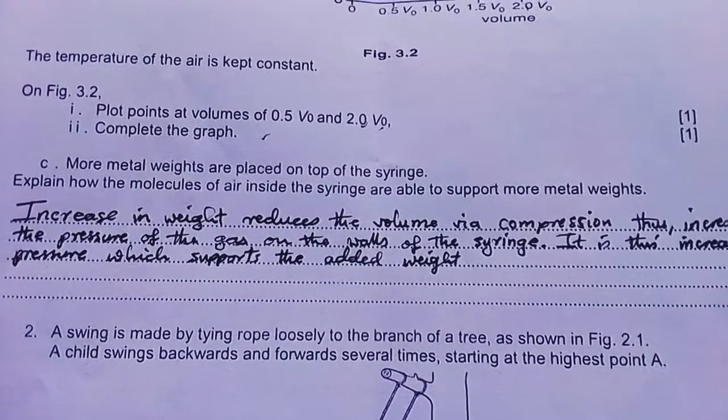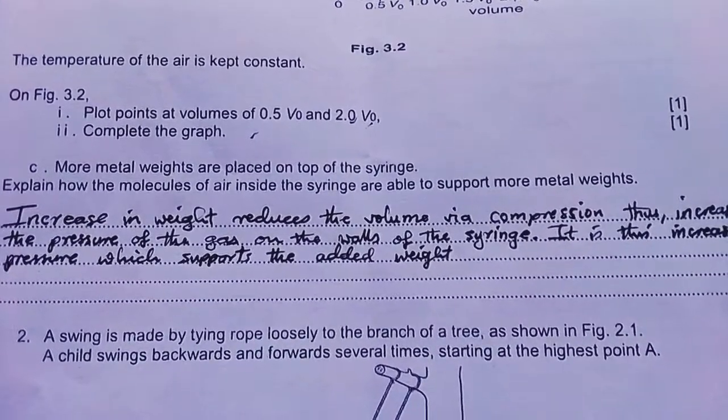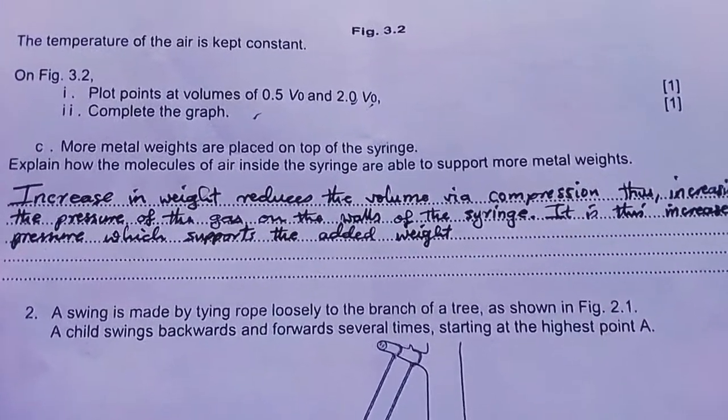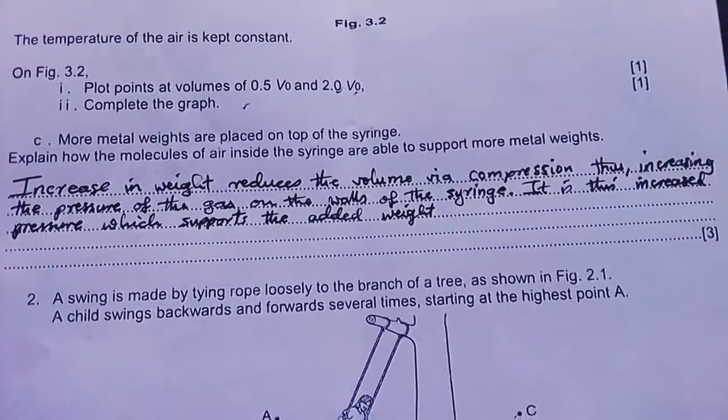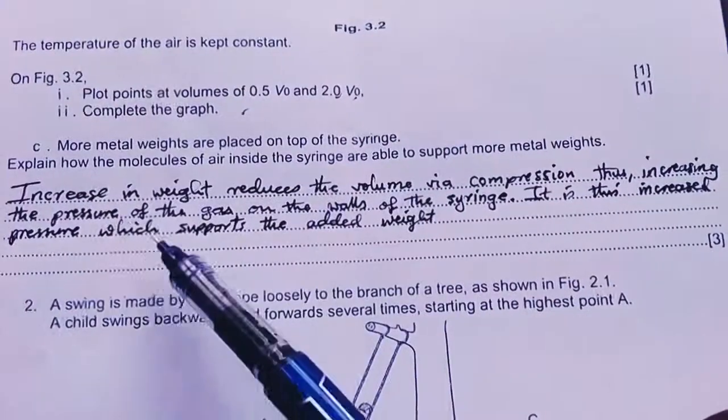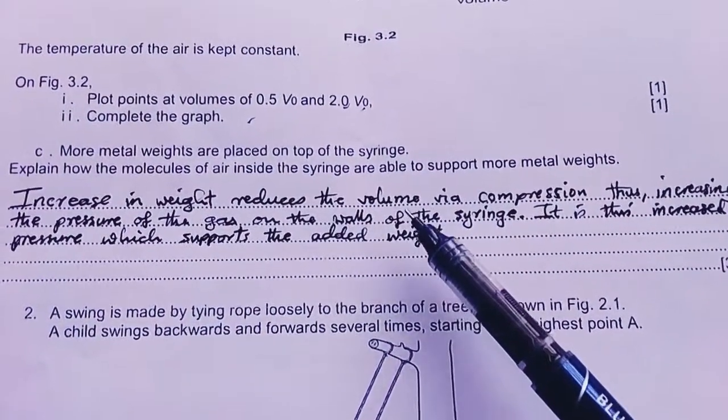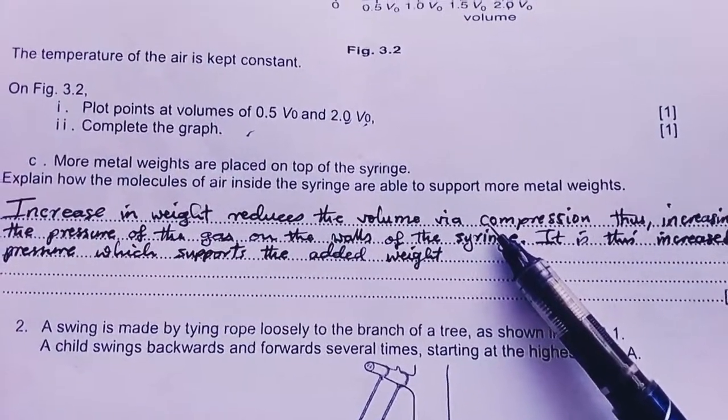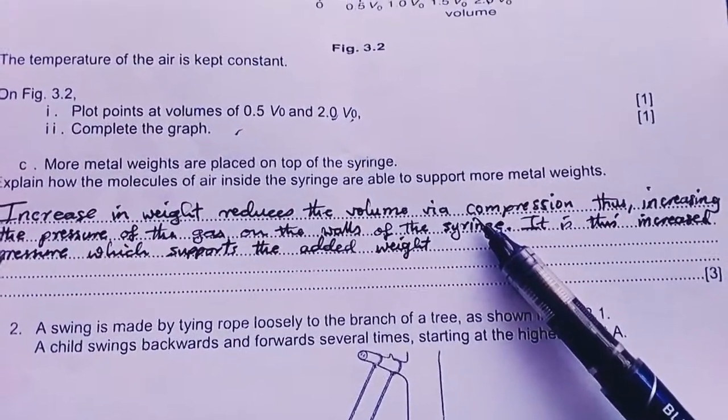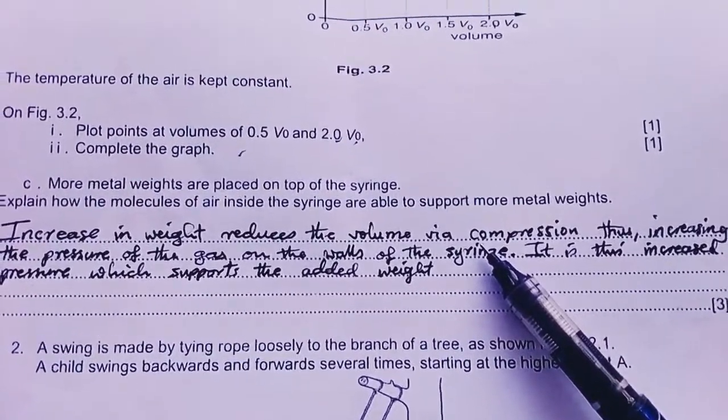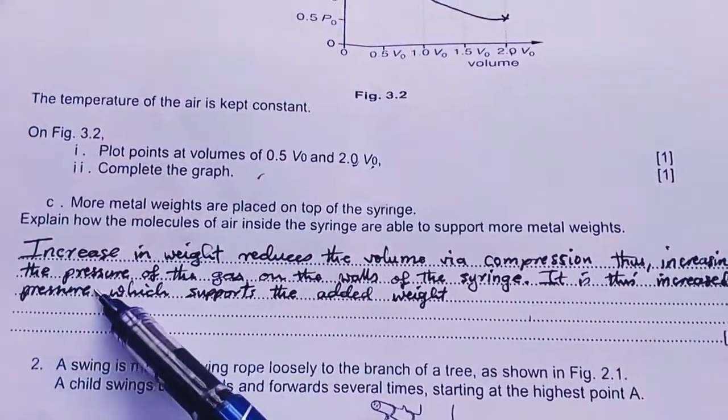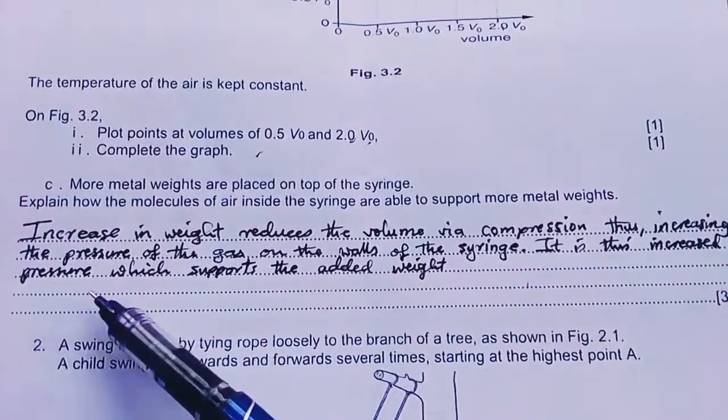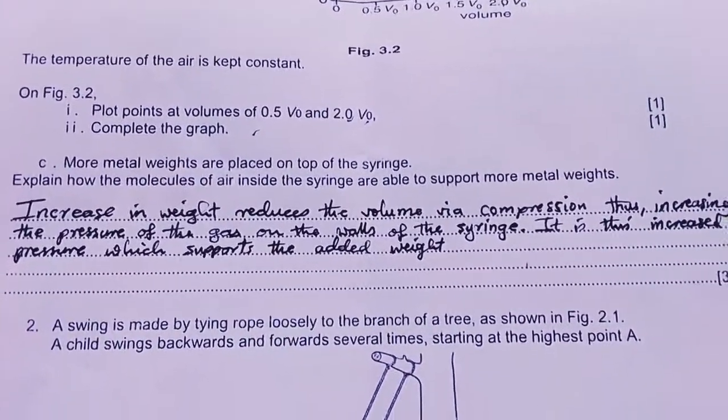More metal weights are placed on the top of the syringe. Explain how the molecules of air inside the syringe are able to support more metal weights. Increase in the weight reduces the volume via compression. When you reduce the volume, you are restricting the movements of the gas particles, which have very high kinetic energy. Therefore, there'll be high pressure, increasing the pressure of the gas on the walls of the syringe. It is this increased pressure which supports the added weight.